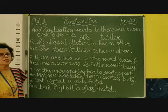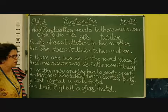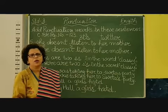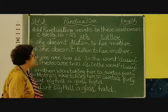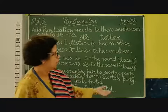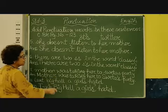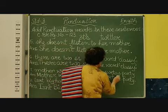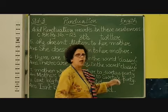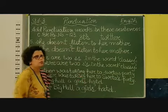Coming to the second added sentence: 'Mother was taking her to Svata's party.' Svata is the name of a girl. An S has been added because it is the name of the girl whose party it belonged to — it is Svata's party. We start with capital M in 'Mother.' The apostrophe is placed after Svata to show that the party belongs to Svata — Svata's party. Then as usual, we put a full stop to end the sentence.